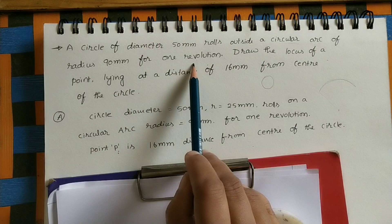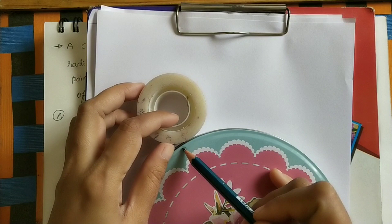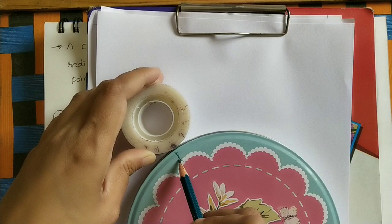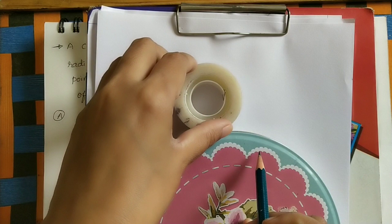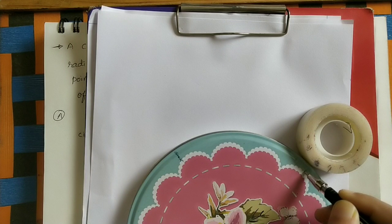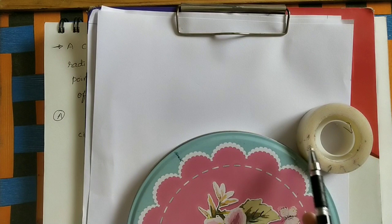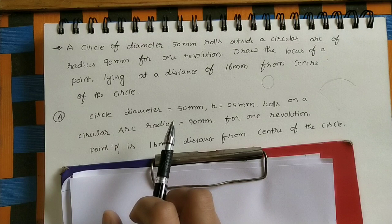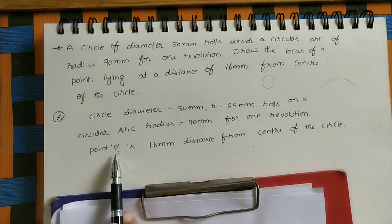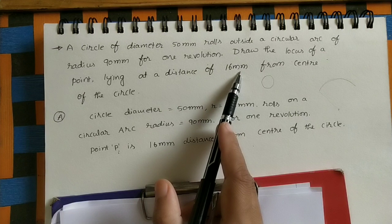One revolution means: take an initial point marked on the curved surface. Now for one revolution the circle is moving slowly. Again the starting point comes back here. From this mark to the next mark, the smaller circle is making one revolution. In the given question it is making one revolution. Draw the locus of a point lying at a distance of 16 mm from the center of the circle.